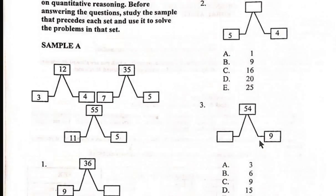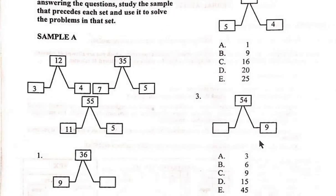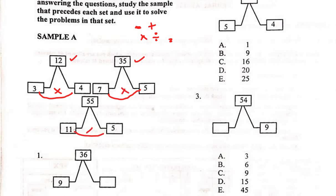Let's look at Sample A. For quantitative reasoning, to answer questions you must have the essential operations in mind — minus, plus, multiplication, division, square, or square root. For this sample, 3 times 4 gives 12. Addition, subtraction, and division don't give 12, so I go straight to multiplication. Then I check: 7 times 5 gives 35 — it works. And 11 times 5 is 55, so I've confirmed the pattern.